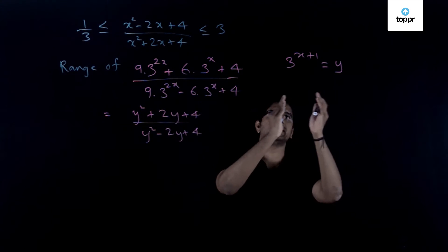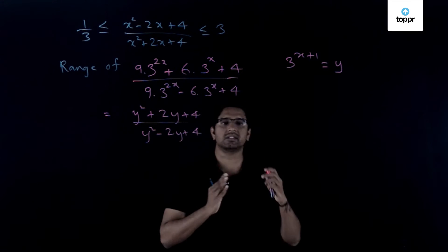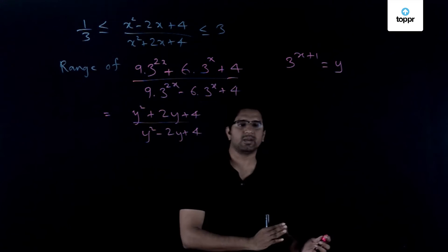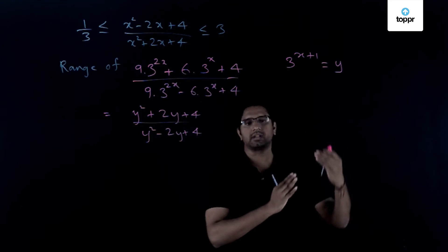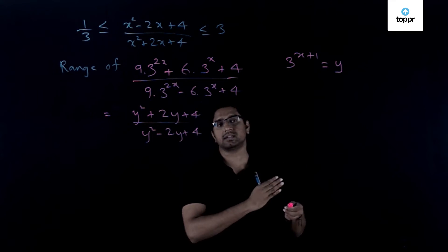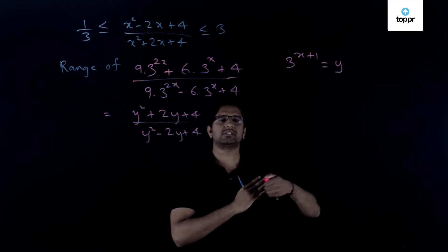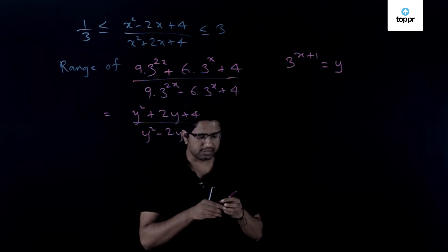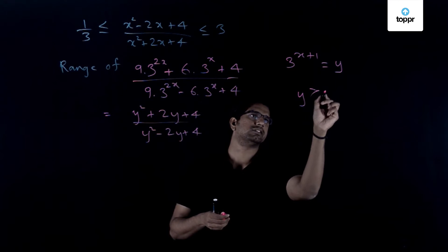But when you make the substitution y = 3^(x+1), here this y cannot take any real value, it can take only positive values. That is because of the property of the powers of 3 or rather a^n where a is a positive real number, then we very well know that its powers are always positive. So that is what we need to be careful here. So we have that y should be greater than 0.